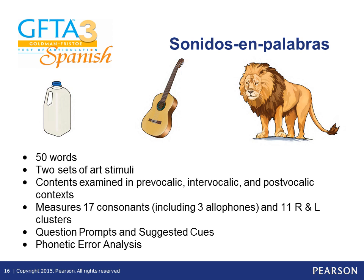The sonidos en palabras test includes two sets of stimuli: cartoon art for younger individuals ages 2 to 6-11, and realistic art for older individuals ages 7 to 21-11. It is recommended that cartoon art be administered to children ages 2 to 6-11, and realistic art to individuals ages 7 to 21-11. However, you can use the art style the individual is most comfortable with. For example, a 20-year-old with cognitive deficits may prefer the cartoon art style, and you can also use realistic art with a 6-year-old if preferred.